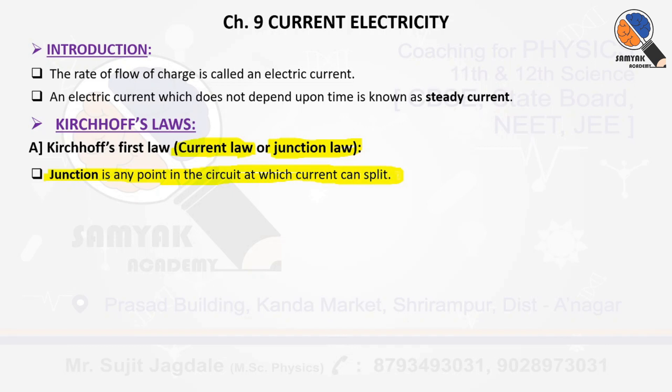In a circuit, it is a particular point where current is going to split — either into two portions, three portions, four portions, it doesn't matter. The basic condition is that the current should be split. Whenever it is going to split, that point is referred to as a junction.